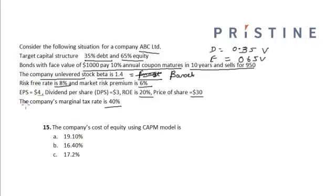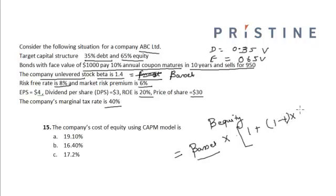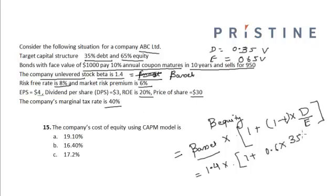Now we find the company's cost of equity using the CAPM model. First, we calculate beta equity for the firm. Beta equity equals beta asset (the unlevered beta) multiplied by [1 + (1 − tax rate) × (total debt / total equity)]. With a tax rate of 40%, this gives 1.4 × [1 + 0.6 × (35/65)], which equals 1.85.